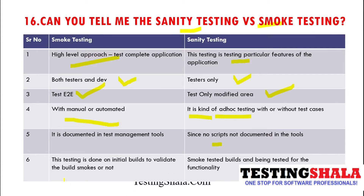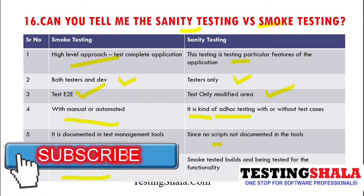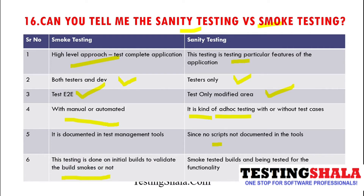Smoke testing is normally done as part of the initial build test to validate whether the build is stable or not. In sanity testing, once the build has passed smoke testing, we then test specific functionality to verify whether it really works or not. These are some of the important differences between sanity testing and smoke testing.